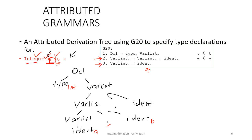Our tree is only halfway done because we still haven't written the attributes of V. To do that, we look at the top of the tree. This branch is an implementation of rule number one. It says type T has the attribute of integer, and we do not yet know the attribute of V. But the attribute computation rule says V gets the value of T. Since T is integer, var list will get the attribute of integer.